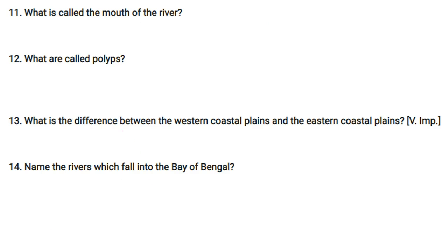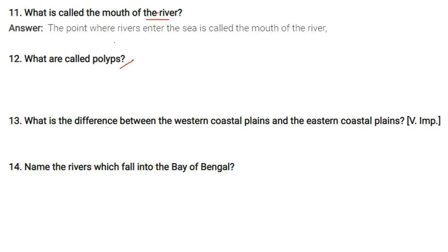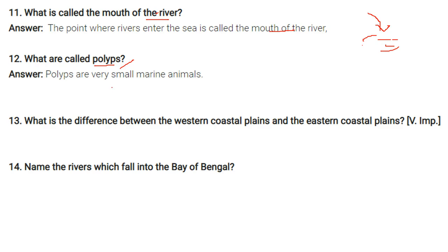What is the mouth of a river? The mouth of a river is the point where the river enters the sea. What are polyps? Polyps are very small marine animals whose skeletons form corals.